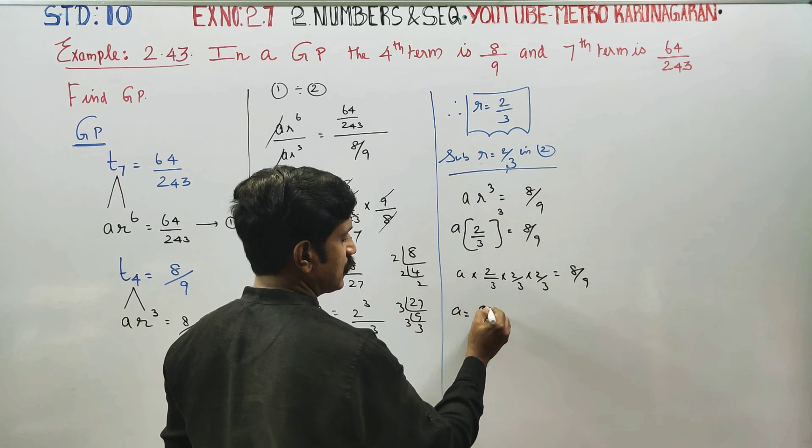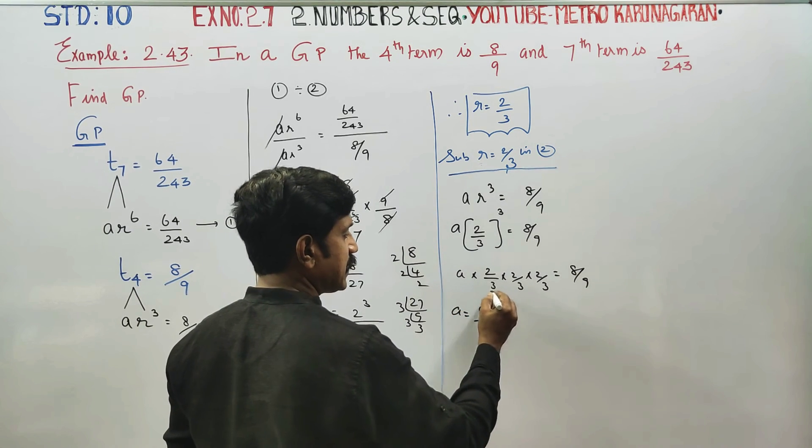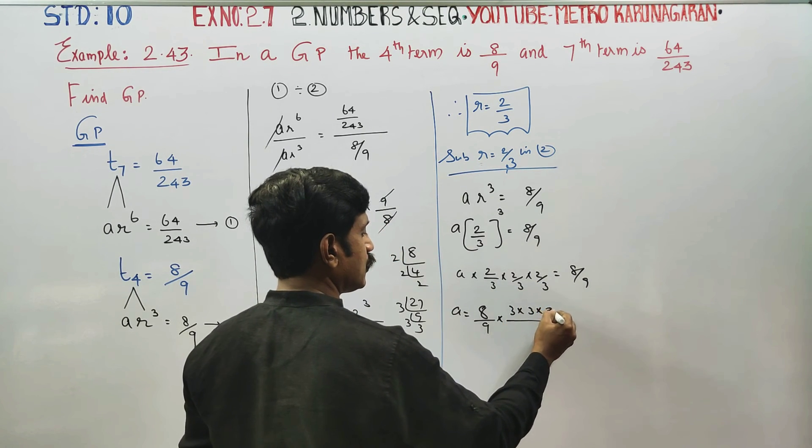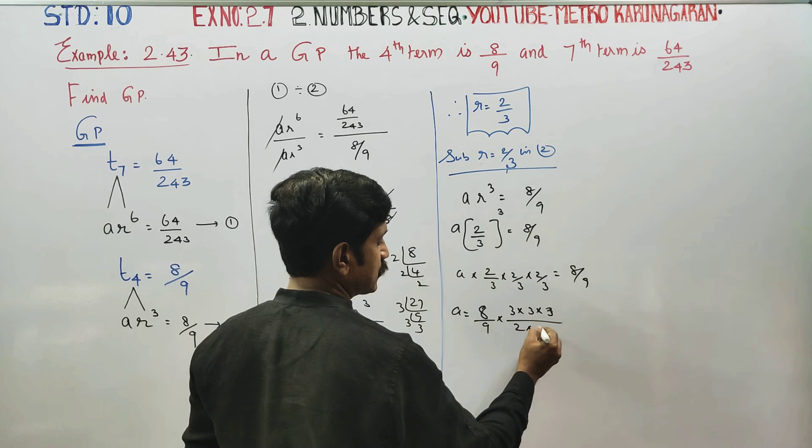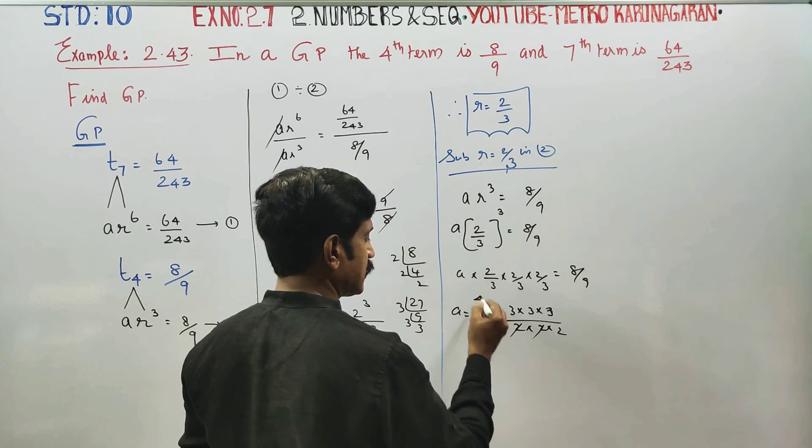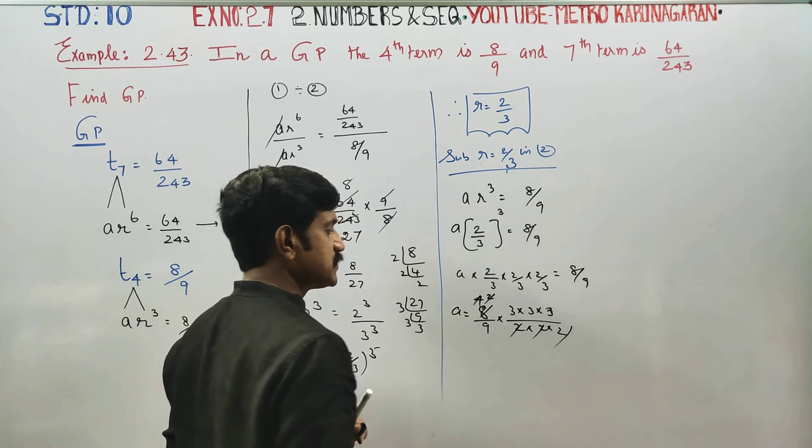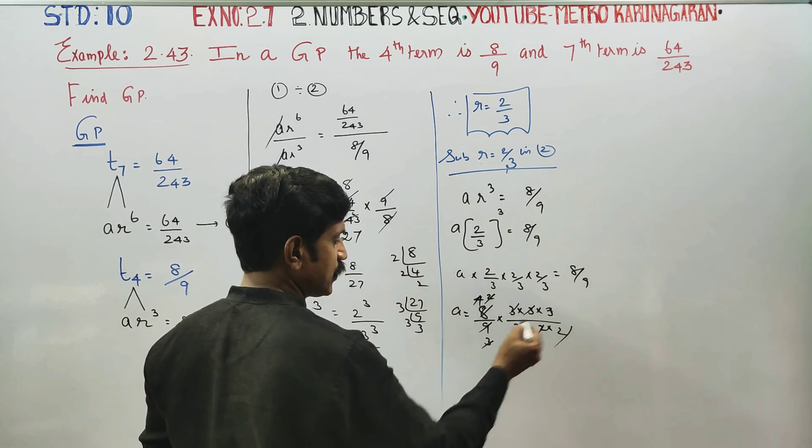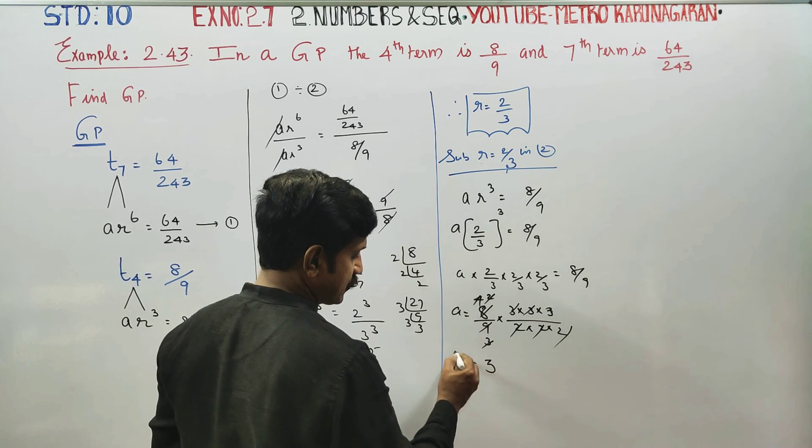Right and cross multiply. Write A is equal to 8 by 10. 2 tables is 4 times, 2 tables is 2 times, 2 tables is 2 times, 3 tables is 3 times, 3 tables is 3 times. A is equal to 3.